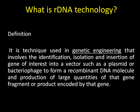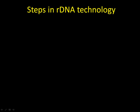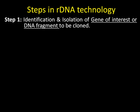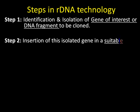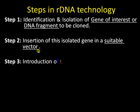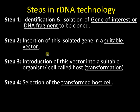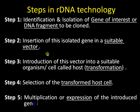We will go through different steps in detail. First, let us have a look at the synopsis of the steps in recombinant DNA technology. Step 1: identification and isolation of the gene of interest or DNA fragment to be cloned. Step 2: introduce this isolated gene into a suitable vector. Step 3: introduce this vector into a suitable host — a process called transformation. Step 4: select the transformed host cell. Finally, multiplication or expression of the introduced gene inside the host.